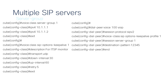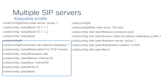Then, configure the keepalive profile. In this case, default values are set, but you can adjust them to your needs. Voice class SIP options keepalive 1, an optional description, transport protocol UDP, down interval 30 seconds, up interval 60 seconds, retry 5 times.